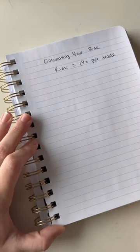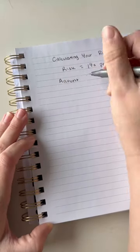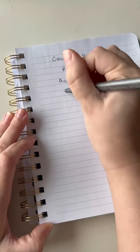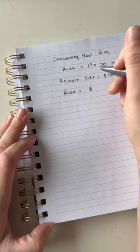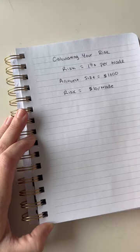So let's say we want to use 1% risk per trade and our account size is $1,000. Our risk is essentially going to be $10 per trade when broken down.